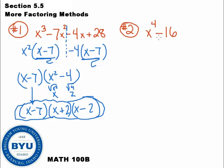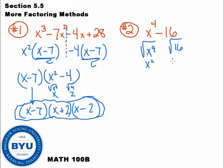Let's take a look at number 2. This is a two-term polynomial with no common stuff. The only way I know how to factor a two-term polynomial is with difference of squares. I'm going to take the square root of x to the fourth — what times what gets me x to the fourth? That would be x squared. And the square root of 16 is 4. So I write two parentheses: x squared plus 4 and x squared minus 4.